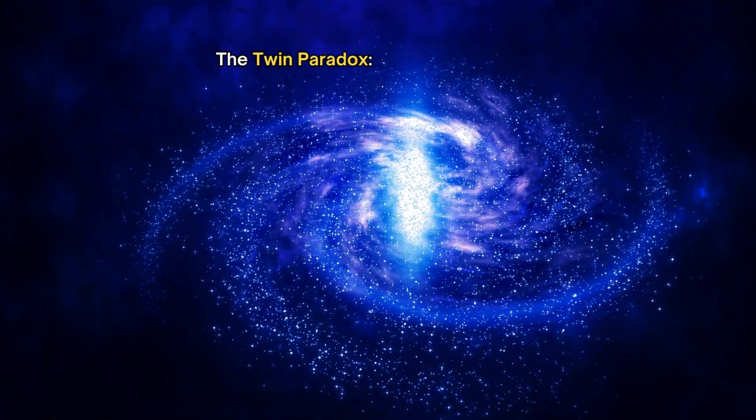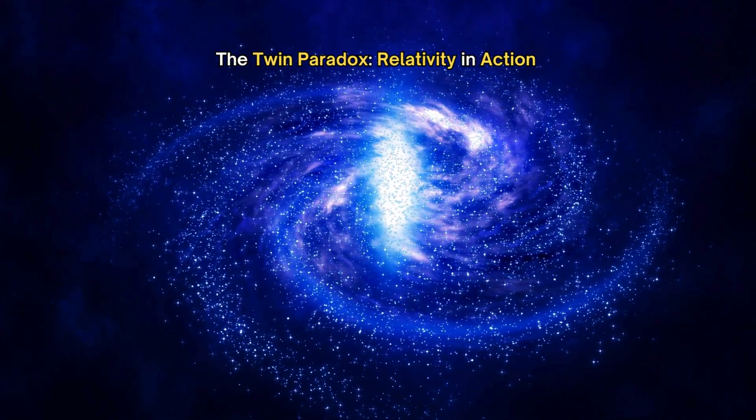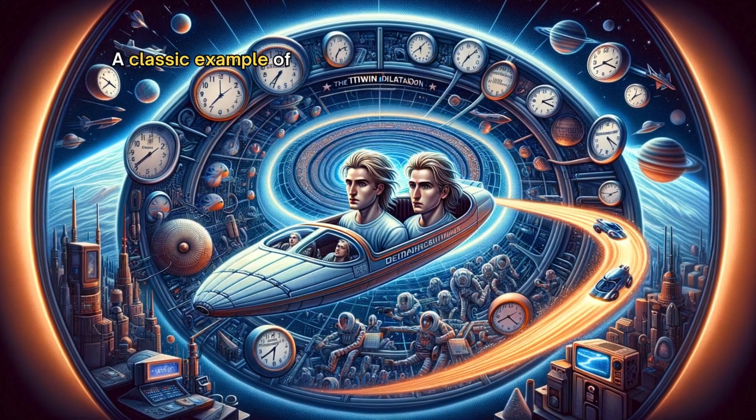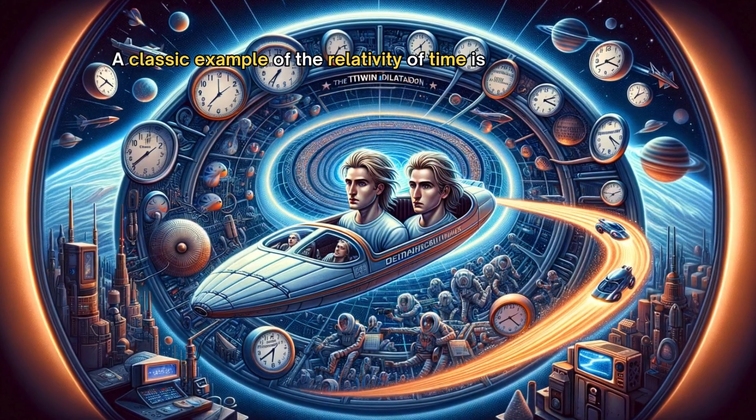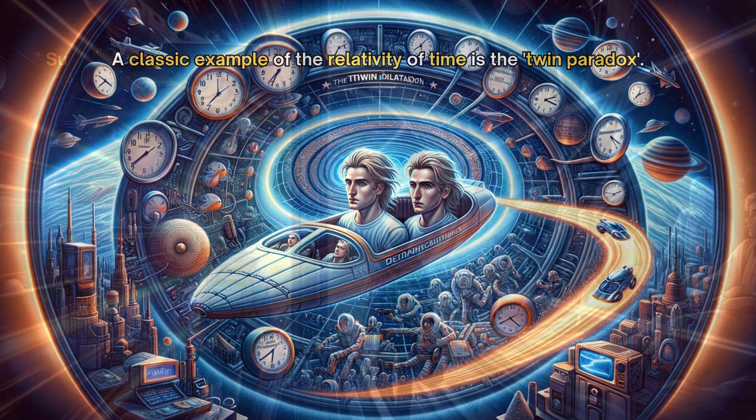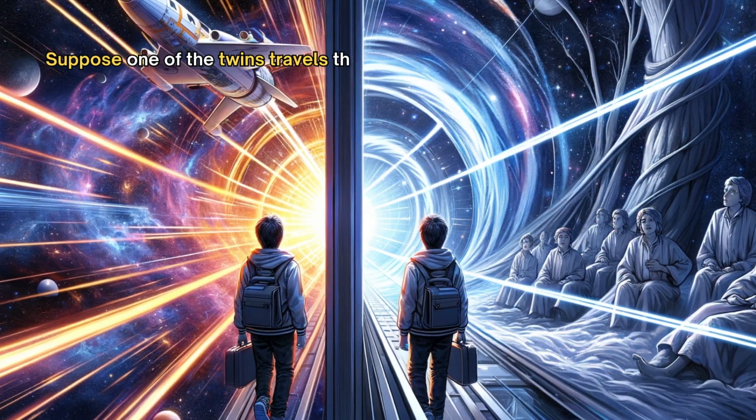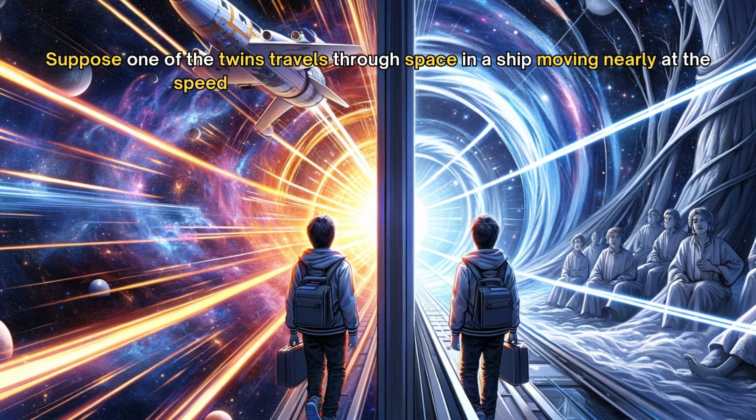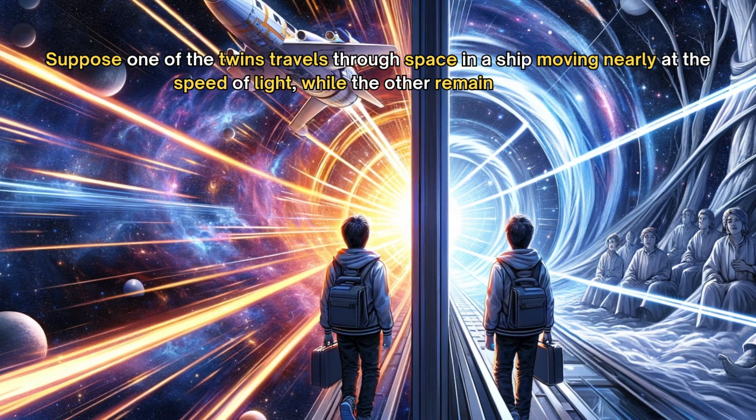The twin paradox: relativity in action. A classic example of the relativity of time is the twin paradox. Suppose one of the twins travels through space in a ship moving nearly at the speed of light while the other remains on Earth.